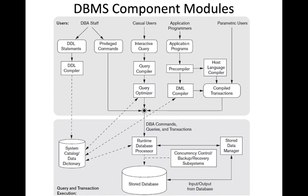Now we will look at the top part first. The first type of user is the database administrator, or DBA staff. Then we have casual users, application programmers, and parametric users. The DBA staff is responsible for creating the data definition, the schema, or the structure of the database.